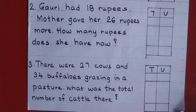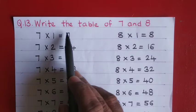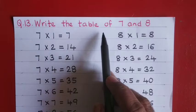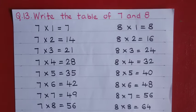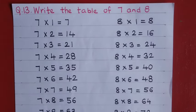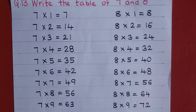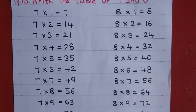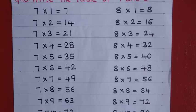The remaining two word problems you can try. Read the sums two times, try to understand the meaning of the sentences, and then solve them. Question number thirteen: write the table of seven and eight. Learn and practice the tables of seven and eight nicely and write them without looking.